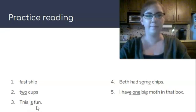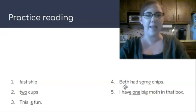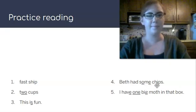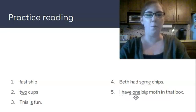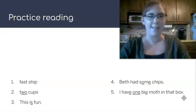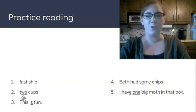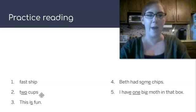We've got two more sentences over here. Repeat after me. Beth had some chips. I have one big moth in that box. Good work. Now remember, you put a period at the end when it's a sentence or a complete thought, and a capital letter at the beginning. But if it's just a phrase or a couple words together but not a complete thought, you still need a space between the words, but you don't need a period or a capital letter.